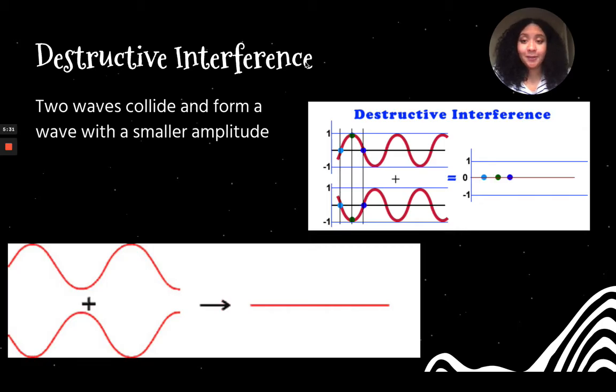Then there is destructive interference. That's when two waves collide to form an even smaller amplitude. If you look at these graphs here, these two waves are opposite of each other. When these opposites interact, they're forming a straight line. That's not a bigger amplitude, that's an even smaller amplitude. There's no wavelength there. So when two waves collide and they're kind of opposites, one's going up when the other's going down in terms of the wavelength, it is creating a smaller amplitude.